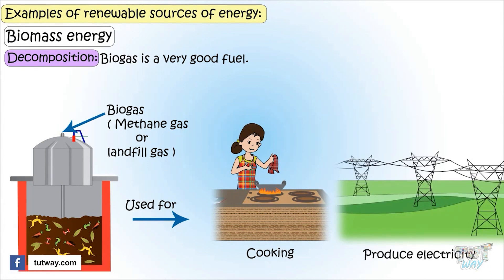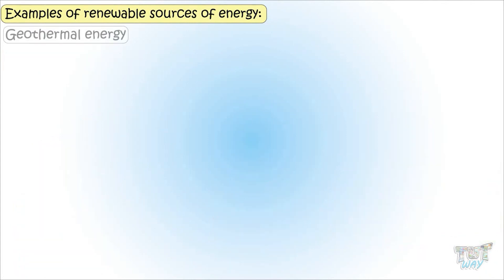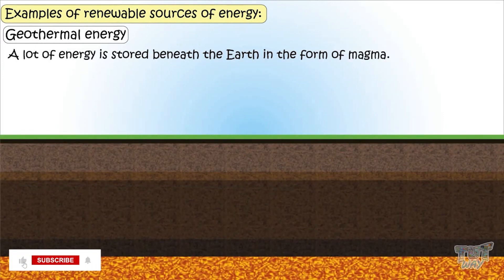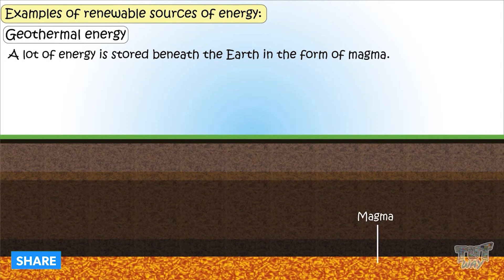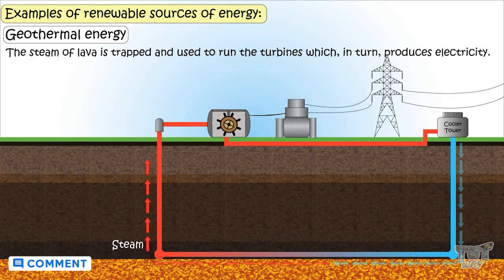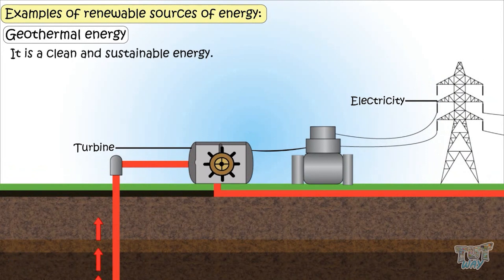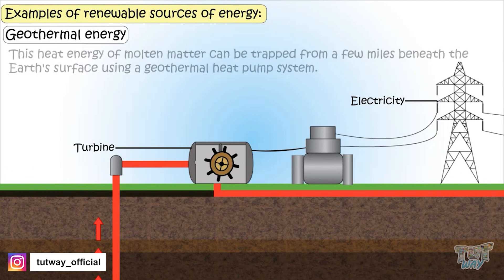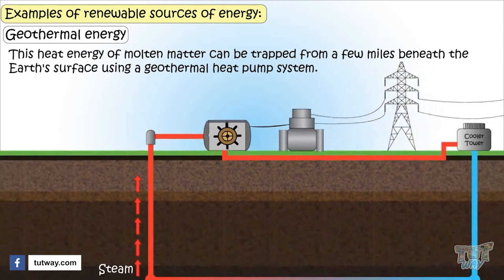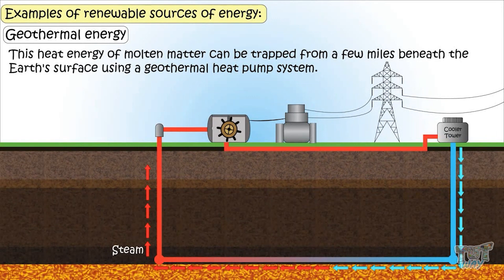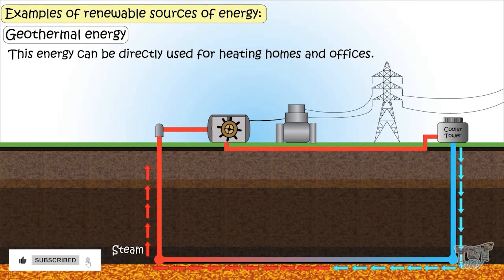Now let's learn about another renewable source of energy — geothermal energy. A lot of energy is stored beneath the Earth's surface in the form of hot molten matter or magma. This energy can be trapped through various means: steam from lava is trapped and used to run turbines, which produce electricity. It's a clean and sustainable energy. This heat energy can be accessed from a few miles beneath the Earth's surface using a geothermal heat pump system, and can be directly used for heating homes and offices.